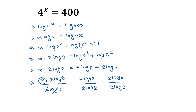Now the 2 and 2 cancel, and log 2 and log 2 cancel on the left side, leaving x. On the right side, in the first term log 2 cancels with log 2, and 4 divided by 2 gives 2. In the second term the 2 and 2 cancel, leaving log of 5 divided by log of 2.